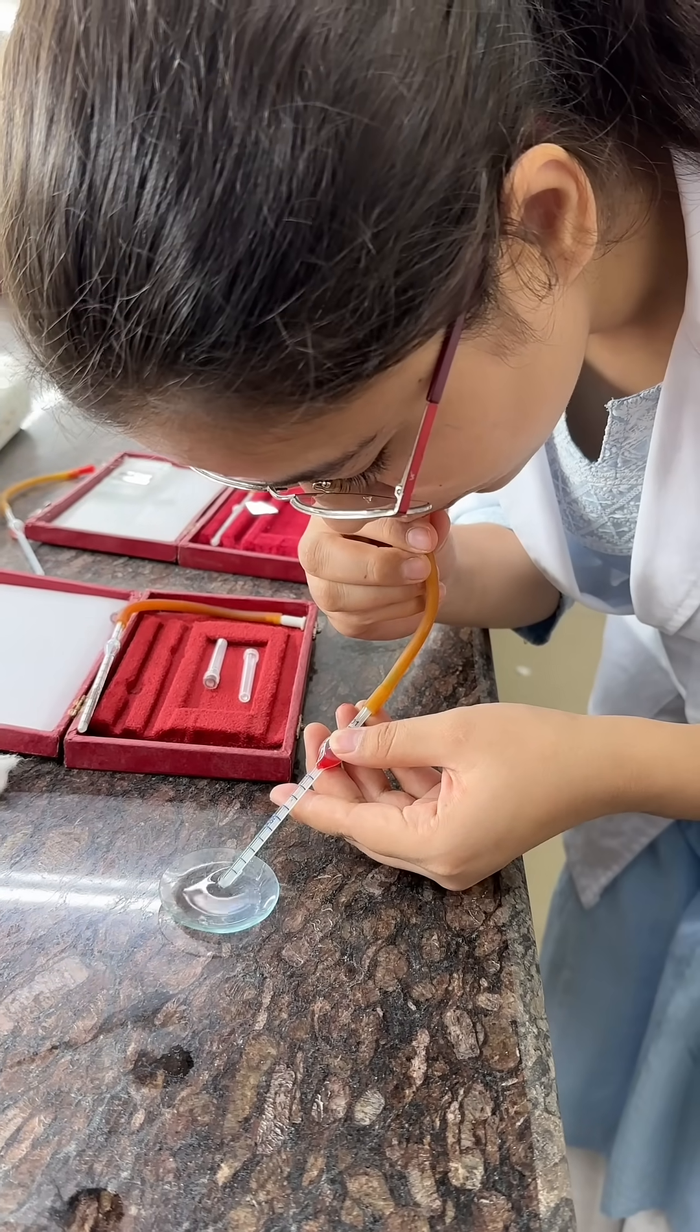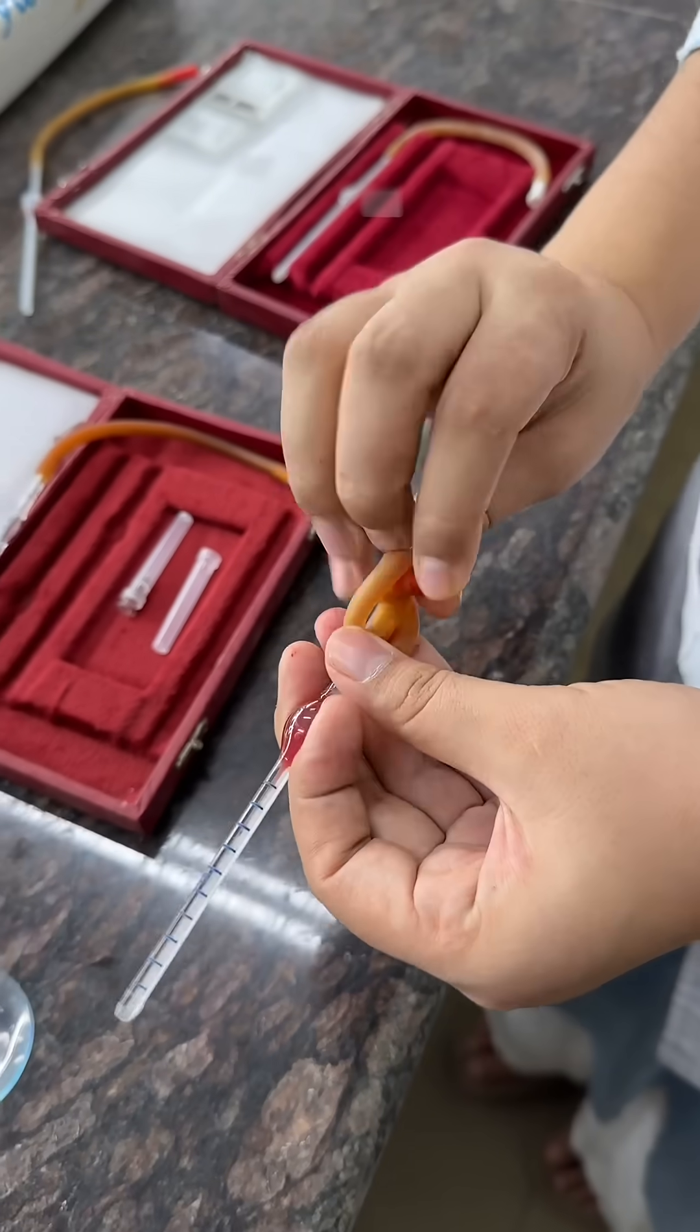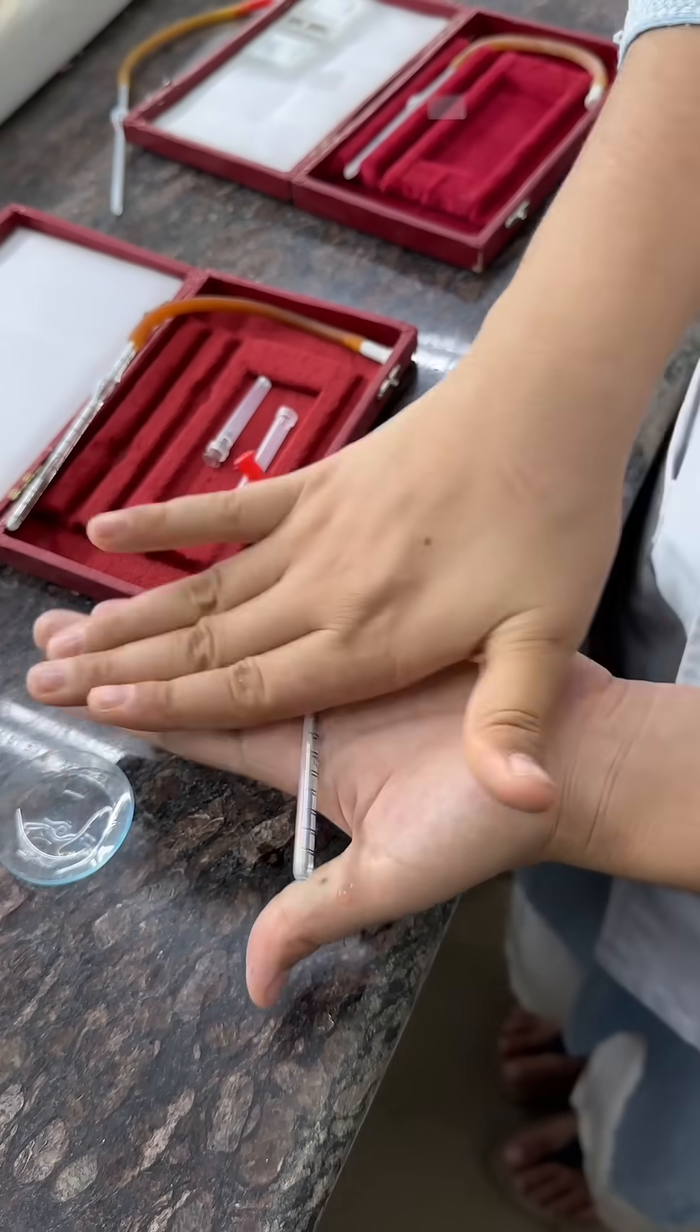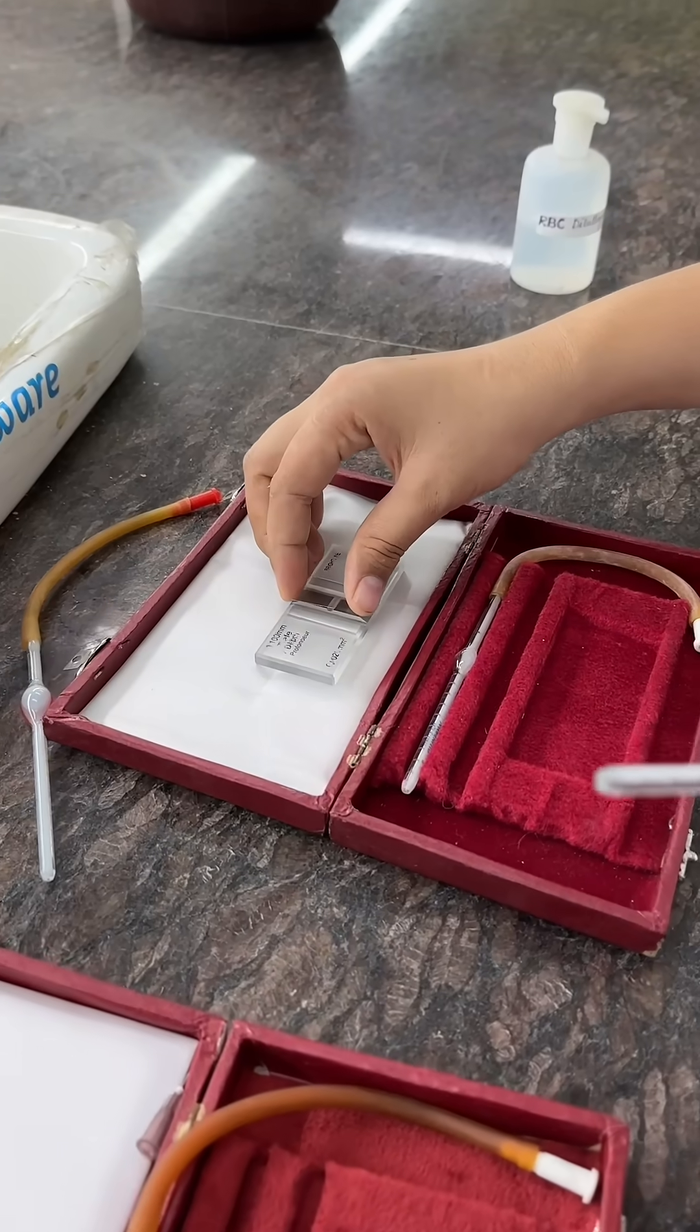Then keep it between palms and roll gently for a minute. Place cover slip over Neubauer's chamber.